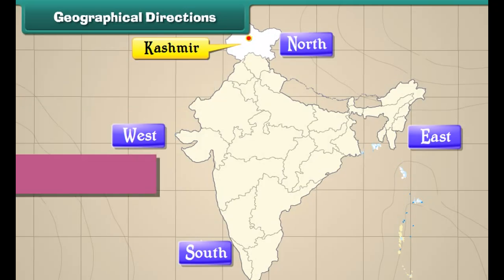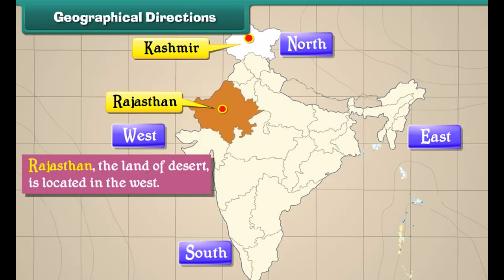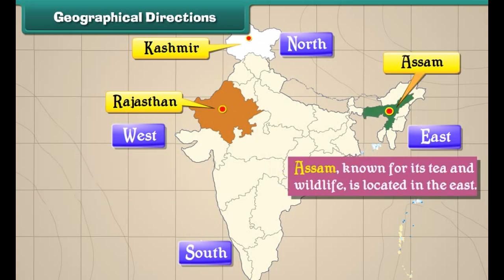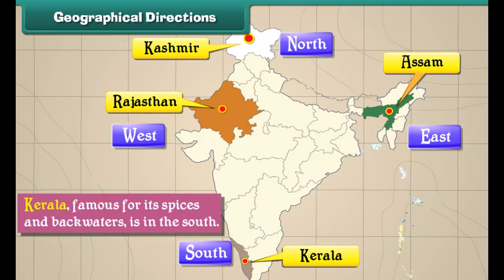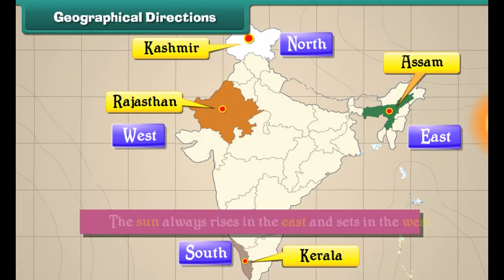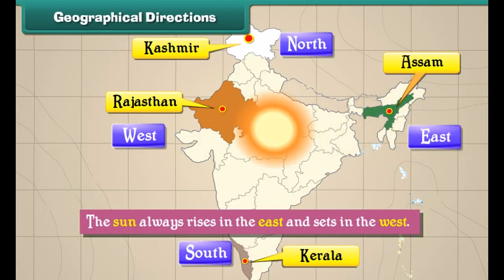Kashmir, the paradise of earth, is located in the north. Rajasthan, the land of desert, is located in the west. Assam, known for its tea and wildlife, is located in the east. Kerala, famous for its spices and backwaters, is in the south.